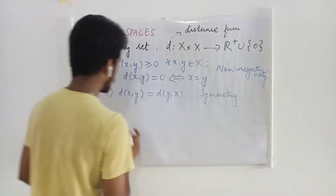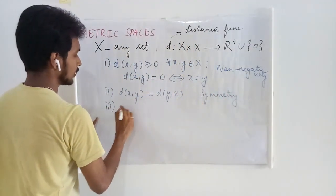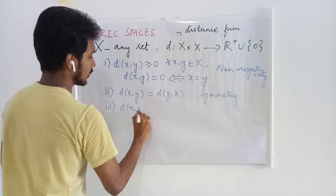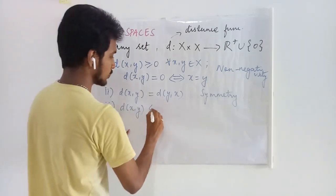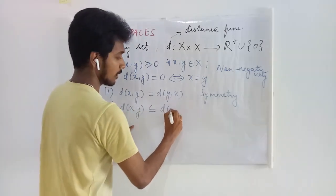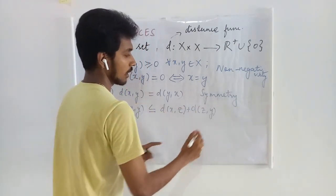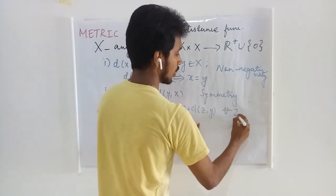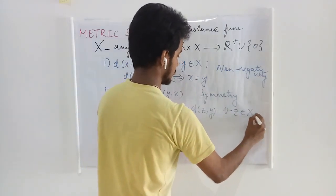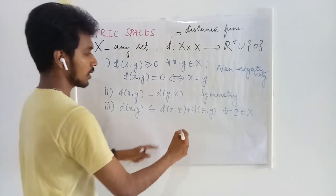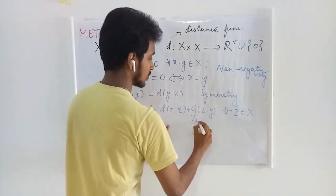The third is triangle inequality: D of x comma y is less than or equal to D of x comma z plus D of z comma y, and this is true for all z in X. This is called the triangle inequality.